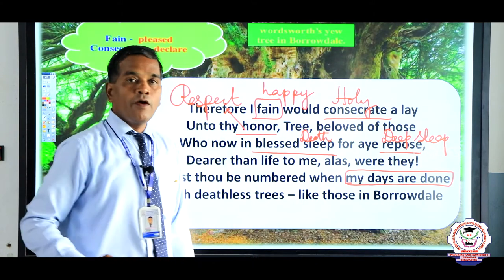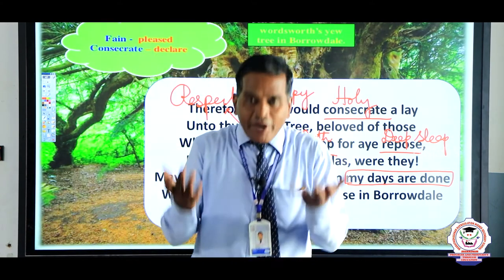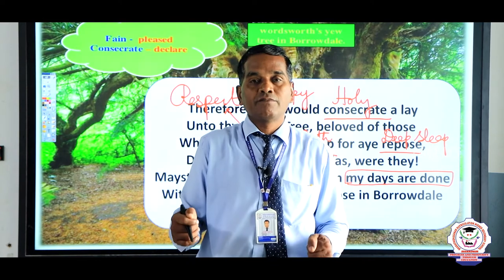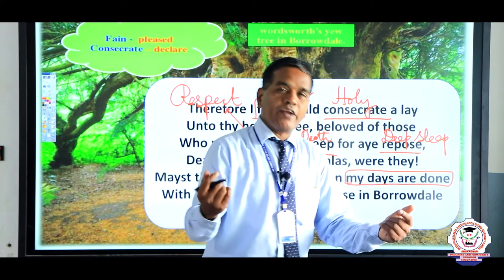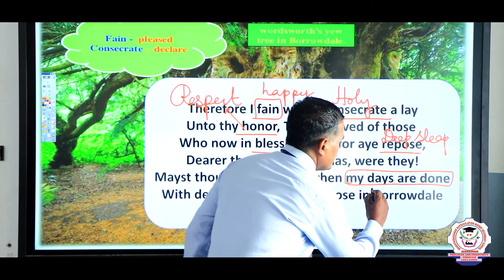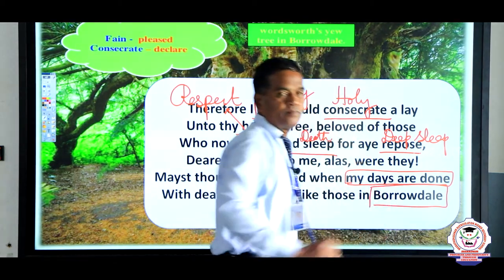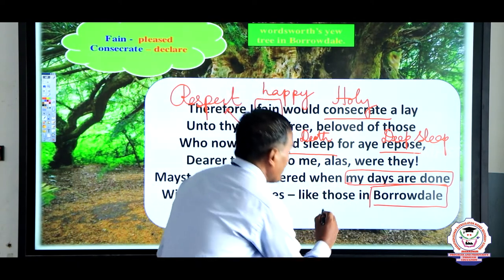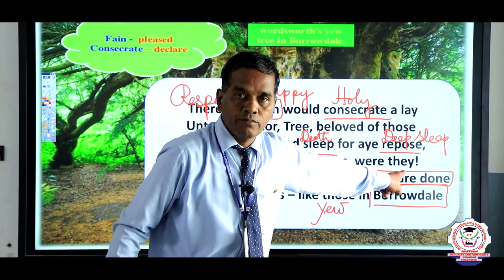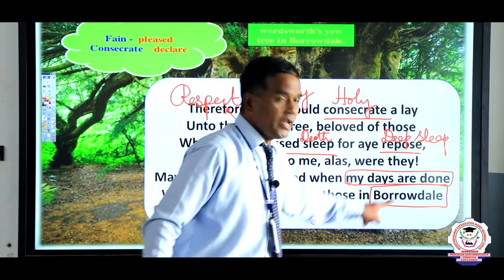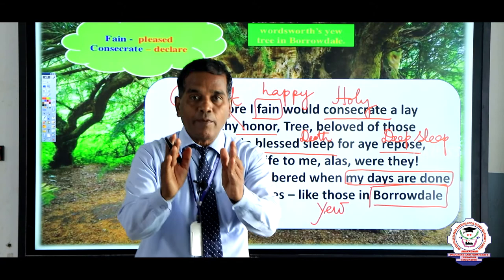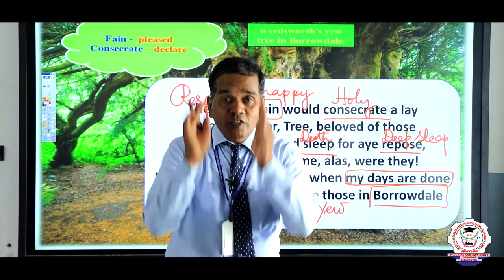The phrase 'when my days are done' means she is counting her days; she is on the brink of death, affected by tuberculosis. 'With deathless trees like those in Borrowdale' — this is a reference taken from William Wordsworth, who talked about a yew tree in Borrowdale, immortalizing it in his poem. In the same manner, Dordath wanted to consecrate and immortalize this tree.